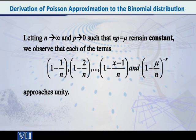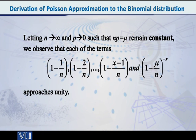Now that we have arrived at this expression that you see on the screen, now is the time to say that we would like to let n tend to infinity and p tend to 0, such that np equals mu remains constant. If we do that, then several terms in this expression will approach unity — that is, they will approach 1. Which terms? 1 minus 1 over n — clearly, as n tends to infinity, 1 minus 1 over infinity equals 1 minus 0, equals 1. Similarly, 1 minus 2 by n, 1 minus 3 by n, and so on — 1 minus x minus 1 by n — all these terms approach 1. And also 1 minus mu by n whole raised to minus x — since mu is constant and n tends to infinity, this also tends to 1.